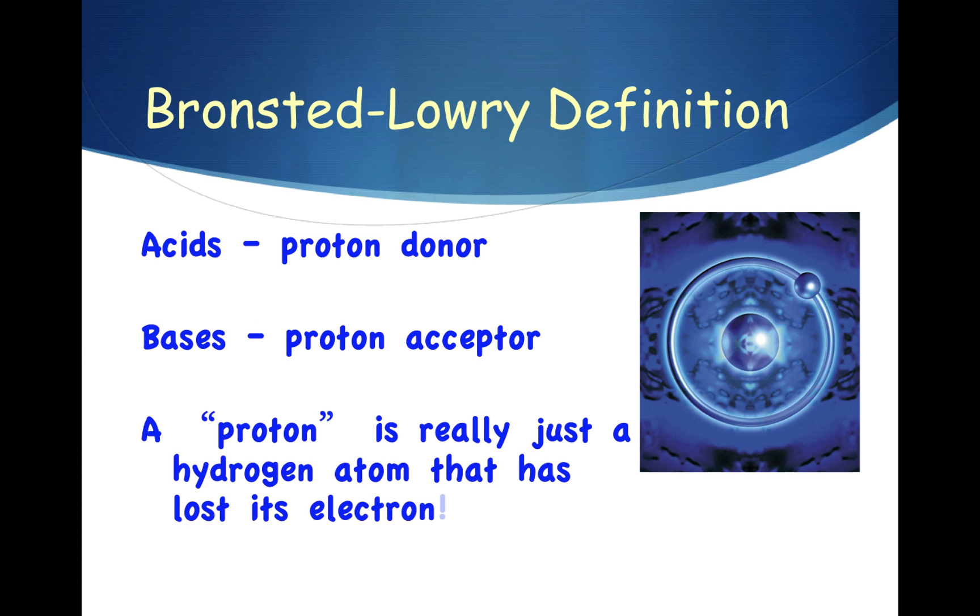Bronsted-Lowry theory. Let's now look at Bronsted-Lowry theory in more detail. Acids are defined as proton donors. Bases are defined as proton acceptors. A proton is really just a hydrogen atom that has lost its electron. And remember, when something loses an electron, it forms a positive ion. This is why hydrogen ion is referred to as a proton.